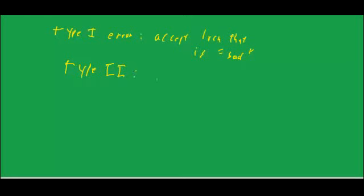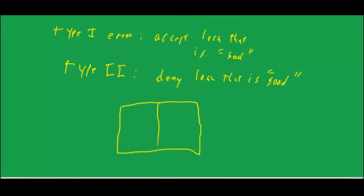Type 2 error is you deny a loan that is good. So let's think in terms of bad and good. Bad is subsequently defaulted. Good is that it actually, somebody else made that same loan and it didn't default, or if you had made the loan, it would not have defaulted.